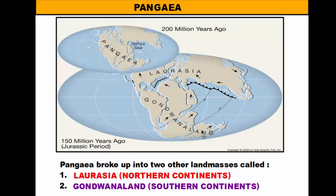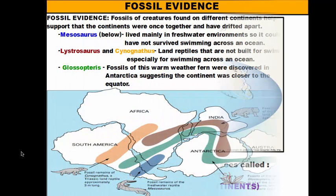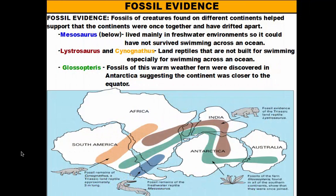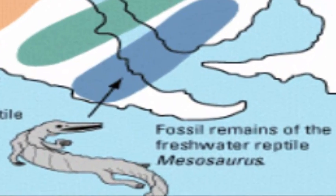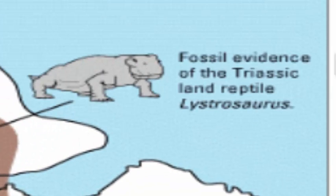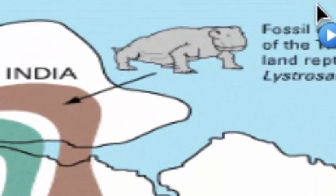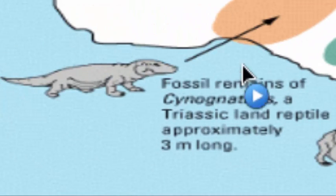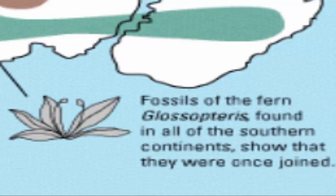When he made this claim, he had a lot of evidence to support it. Some of the major pieces of evidence involved fossils found around the world. The four fossils we will concentrate on are Mesosaurus, an aquatic freshwater reptile; Lystrosaurus, a land reptile; Cynognathus, another type of land reptile; and Glossopteris, which is a fern.